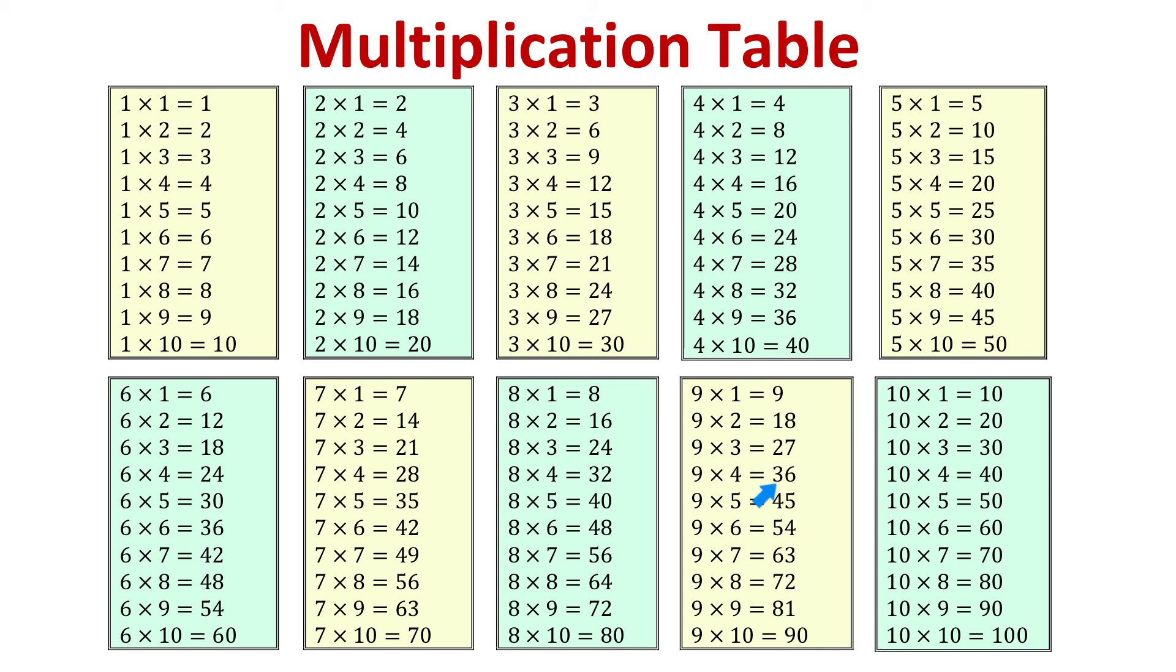Each digit in the tens place is just one less than the number we are multiplying by. So, if we are multiplying 9 by 4, then the product will start with 3.